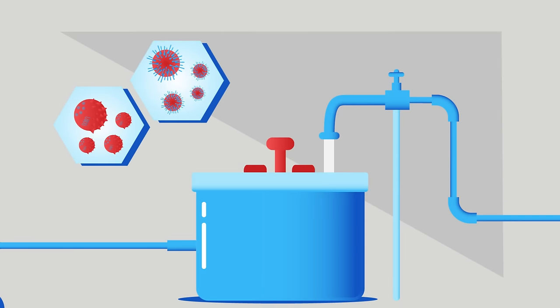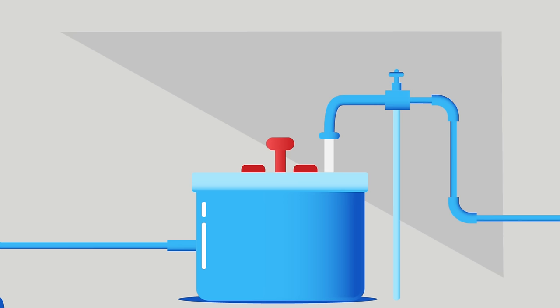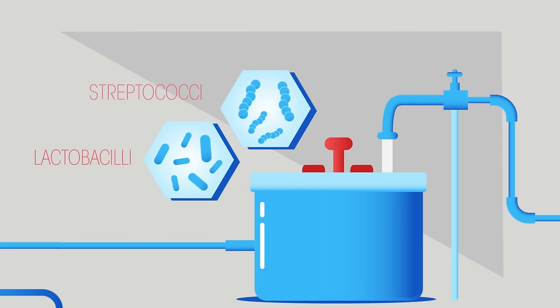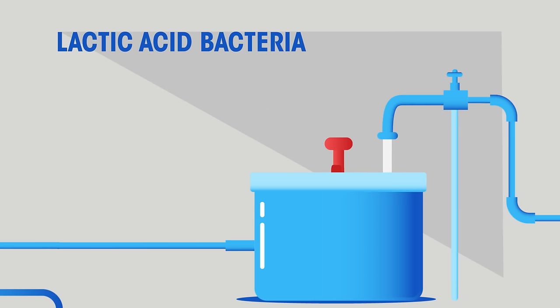You might be wondering, why on earth are we adding bacteria when we've gone to all the effort so far of killing all the bacteria? We're adding lactic acid bacteria, which are also used in cheese manufacturing. The two species used to make yogurt are lactobacilli and streptococci. But don't worry, you don't need to learn these names, just remember that lactic acid bacteria are added.